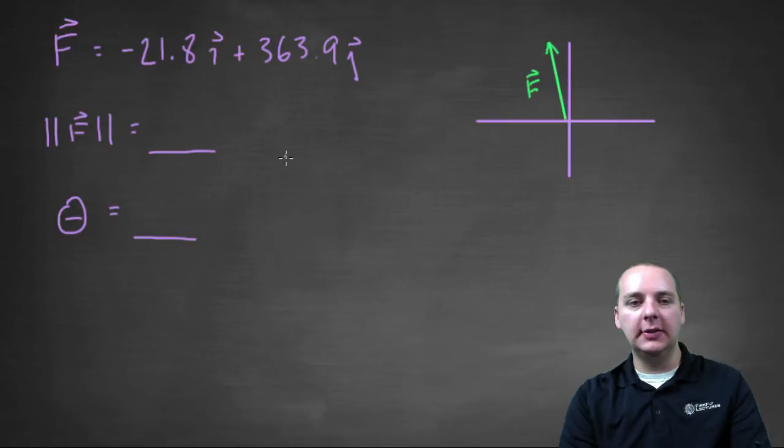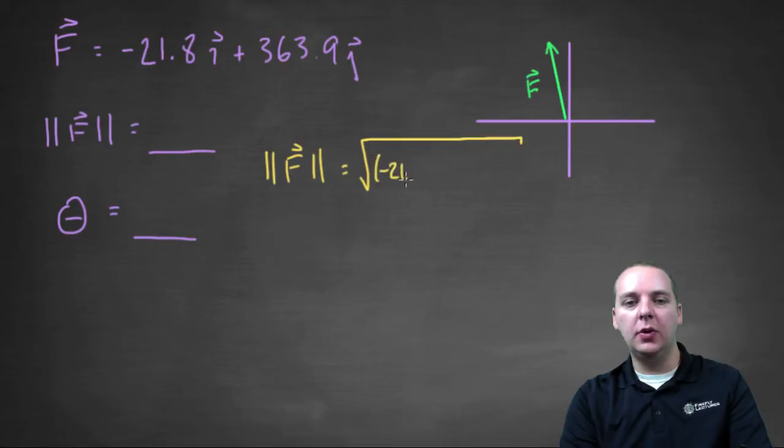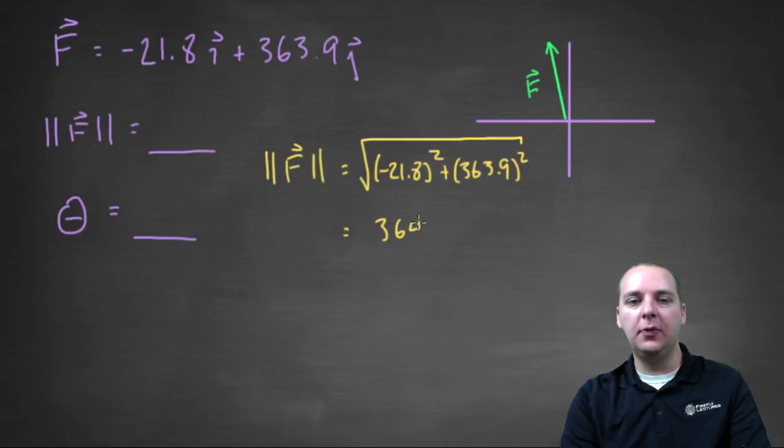Here we have the same vector again, and let's see if we can find his magnitude here. So what we would do to get the norm of this force is we would take the square root of negative 21.8 squared plus 363.9 squared. And just to save us a little time, I went ahead and did this math. I got 364.6, and you can check my math on that.